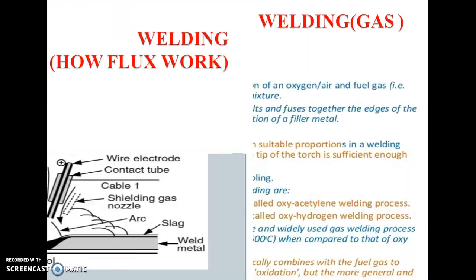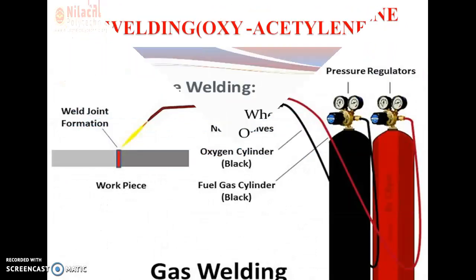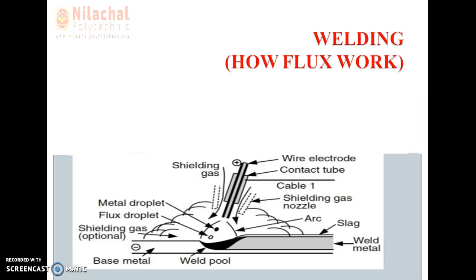Here in this slide, you can see how atmospheric contamination is prevented by using flux. The electrode contains the flux coating. During the arc, this flux also gets burned. Due to the burning of the flux, white smoke is created, which seals the weld pool from atmospheric oxygen and prevents atmospheric contamination of air from reaching the weld pool. This is the basic phenomenon of using flux.